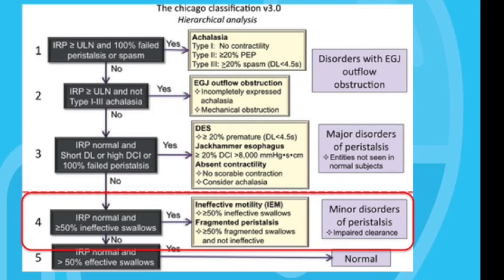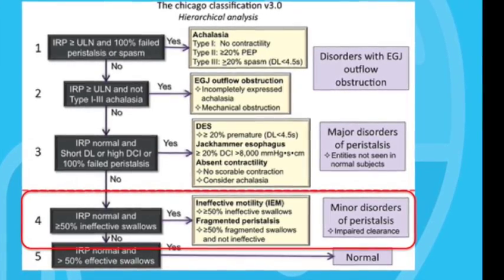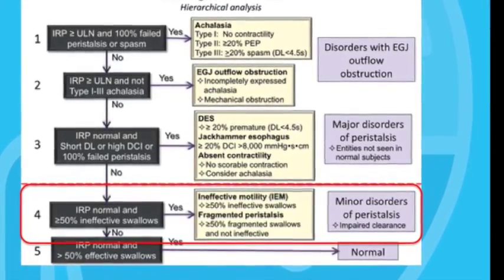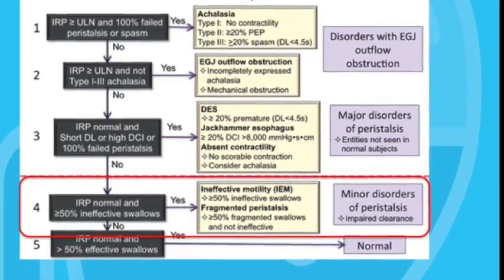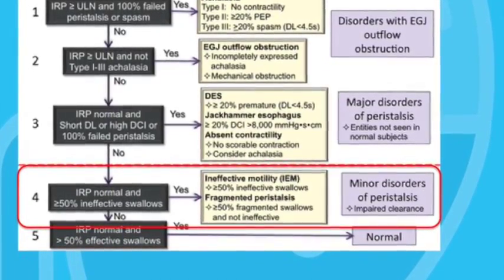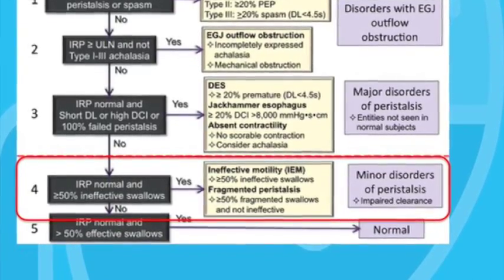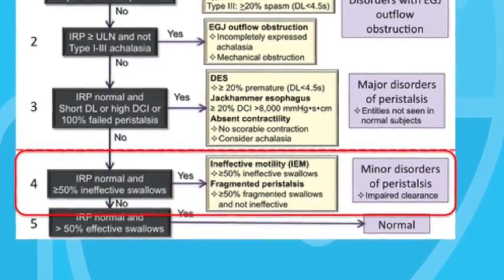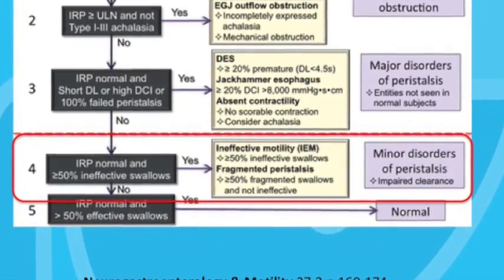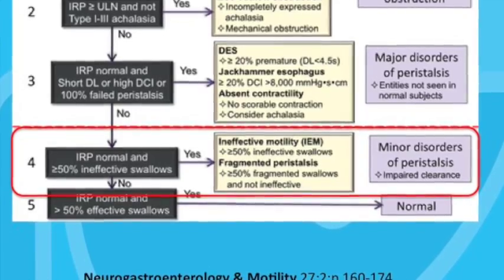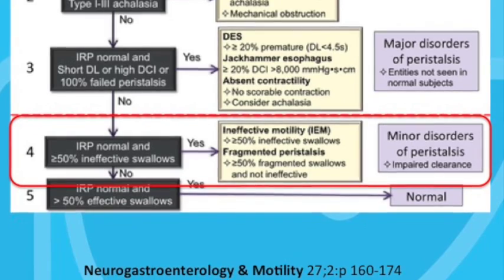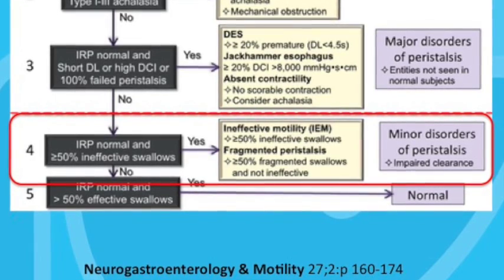Whatever happened to the term scleroderma esophagus? This is a term that dates back to the origins of esophageal manometry, describing totally absent esophageal peristaltic activity along with a low or absent EGJ pressure. While this situation can be seen in individuals with systemic scleroderma, it can also be seen in patients without any evidence for this disease. A better term to use would be absent peristalsis with low EGJ pressure.